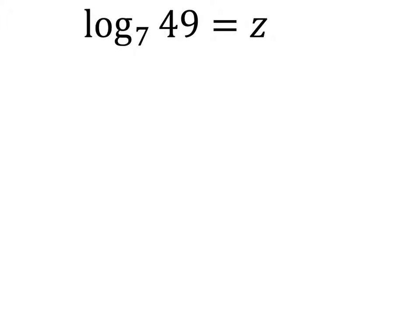And again, this is just based on what we've learned so far. I'm just going to exchange this logarithmic form for exponential form. And that gives me 7 to the power of z equals 49, as you see here.